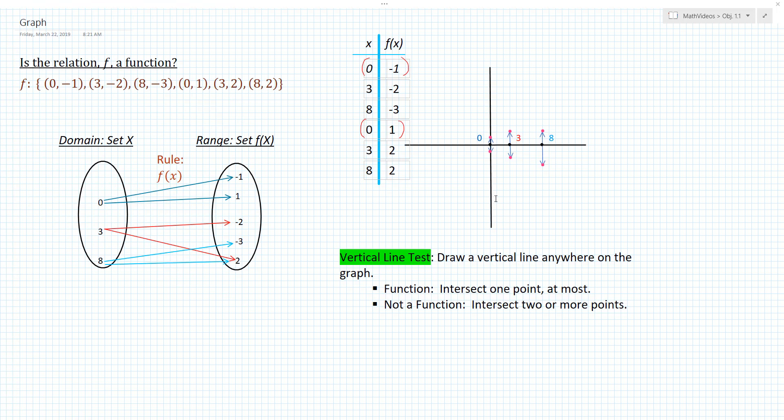Now what I want you to notice from our graph, we have the x value 0, and we can see that 0 has two points associated with it. It has the point 0, 1, and 0, negative 1.